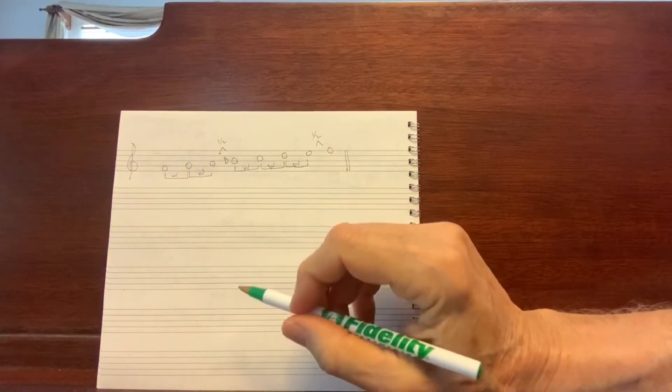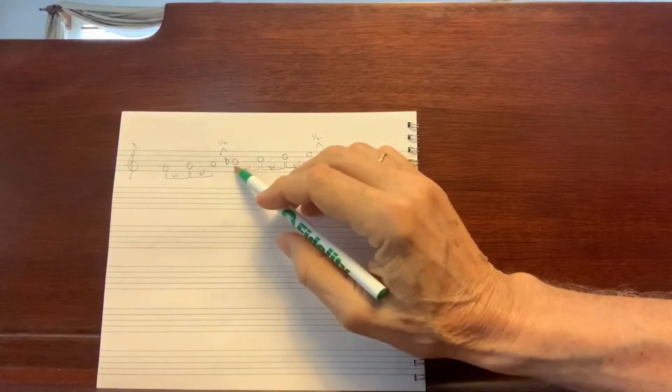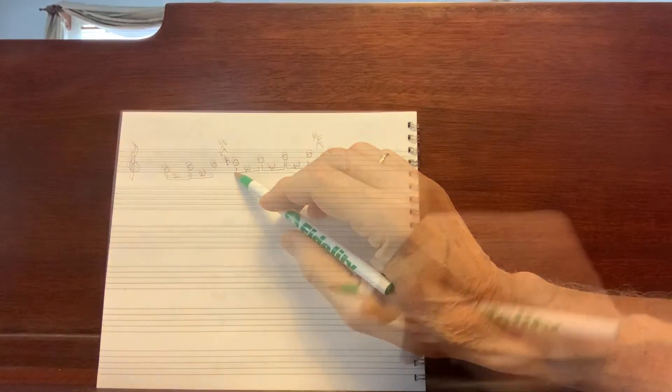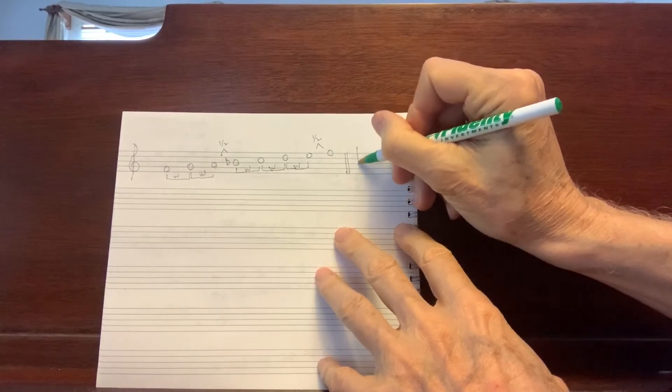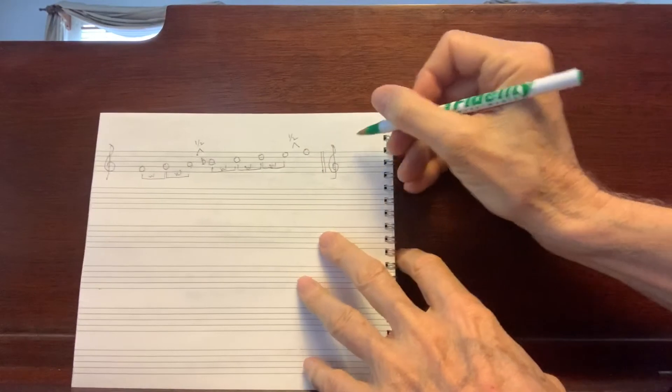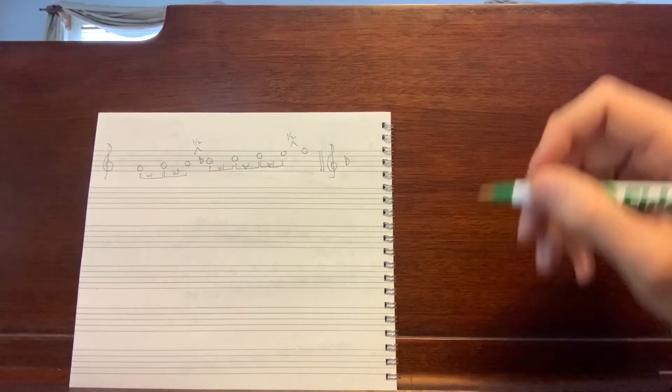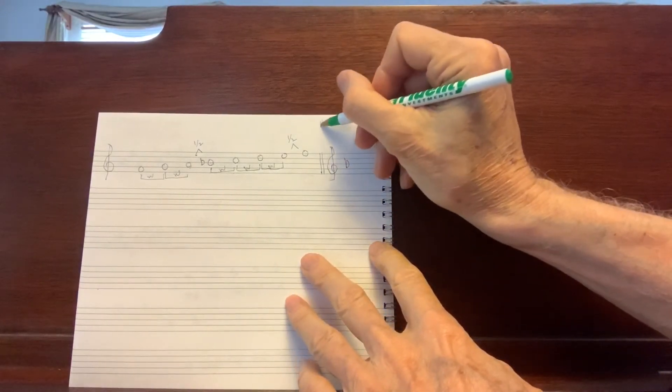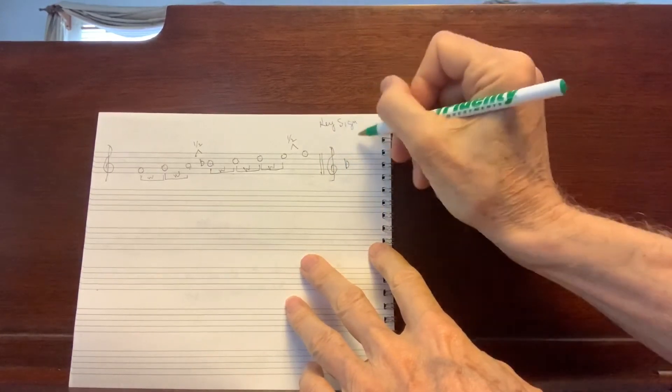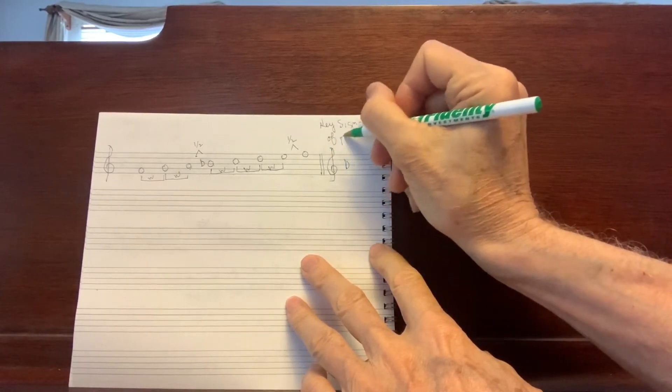So the new addition, just to recap, is the appearance of a flat on the fourth step of the scale. So in writing the key signature, it would look like this. We would just put a B flat there. And I claim that this is the key signature of F major.